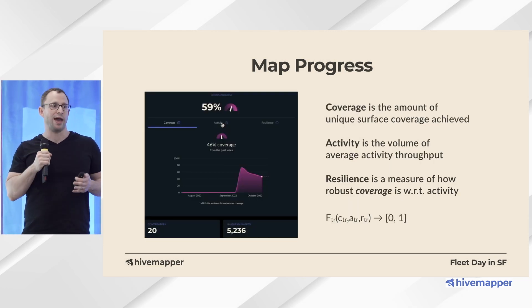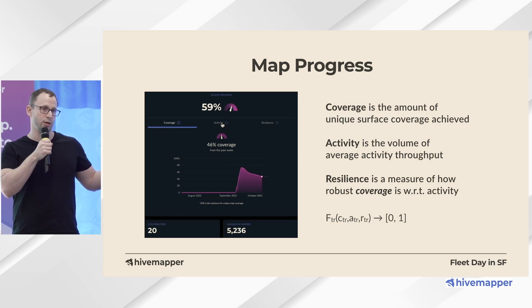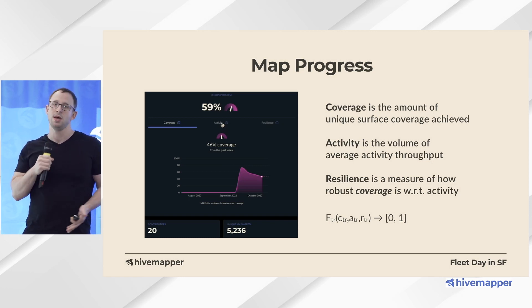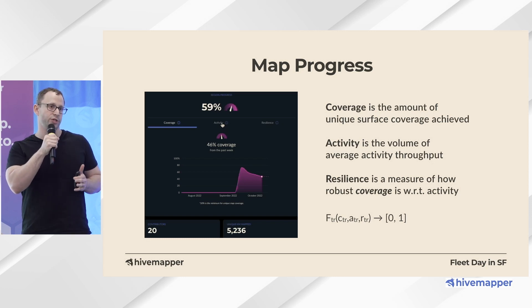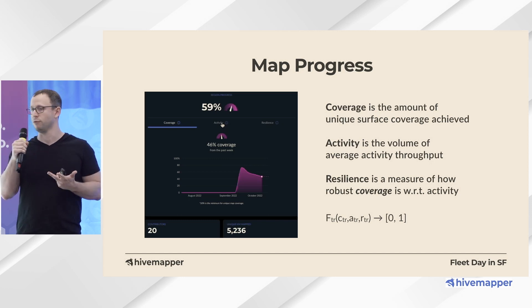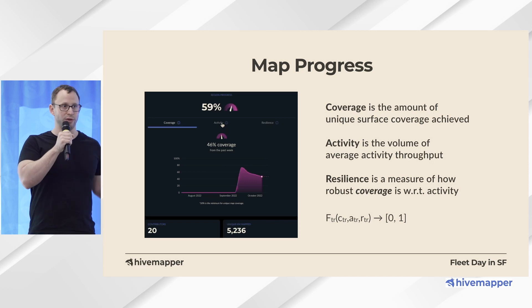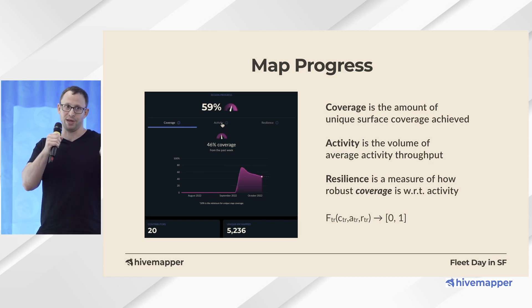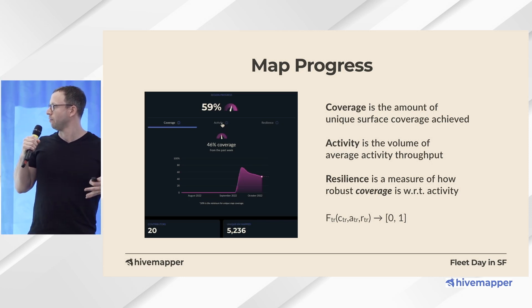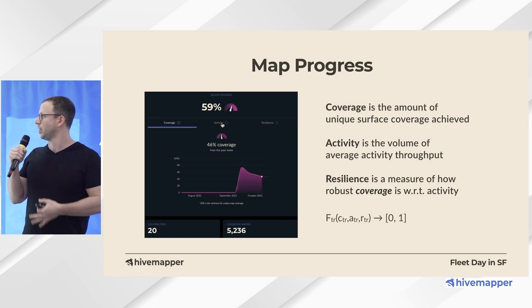We have three main factors for map progress: coverage, activity, and resilience. Coverage is how much unique road was captured in the past reward period — a week. Activity is the volume of active contributors. Resilience is how robust that coverage is with respect to the number of contributors. So how confident can you be that coverage is going to continue going forward? If you think about one or two people mapping everything 24/7, I wouldn't bet on that continuing. We want it well distributed throughout the entire community of a region, which lets us reward teamwork and encourage a more collaborative environment.